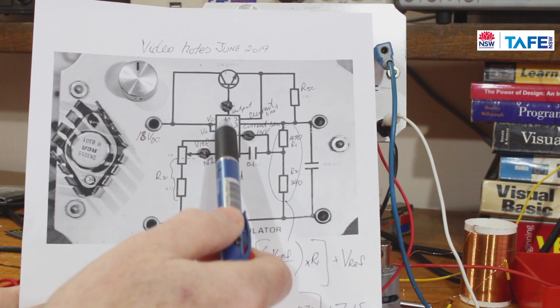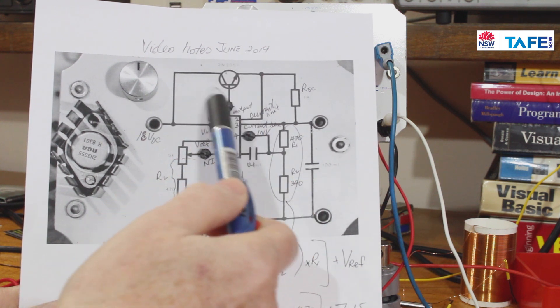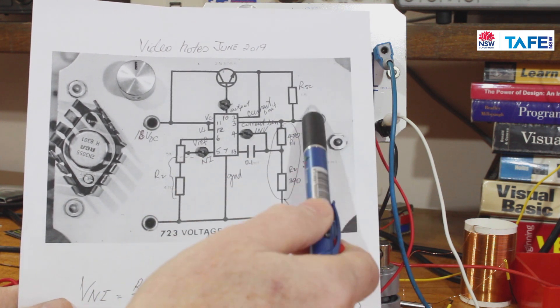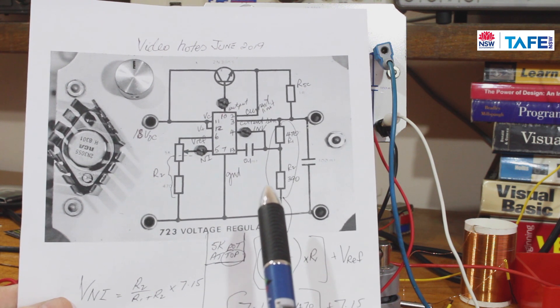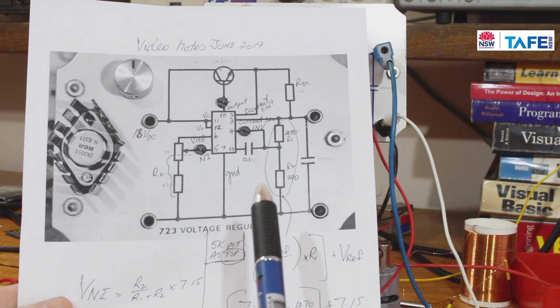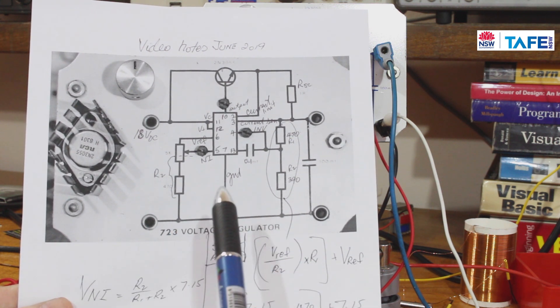So it can usually be employed with any number of output transistors to give any amount of current that we want from a very high current power supply. It becomes therefore the heart of a high current precision regulated power supply.